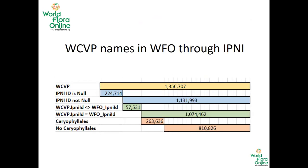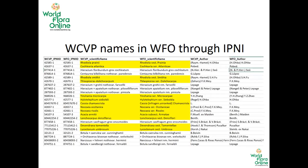This representation shows that out of the 1,356,000 records or names in WCVP, only 810,000 were actually able to be matched to something we already have in WFO.